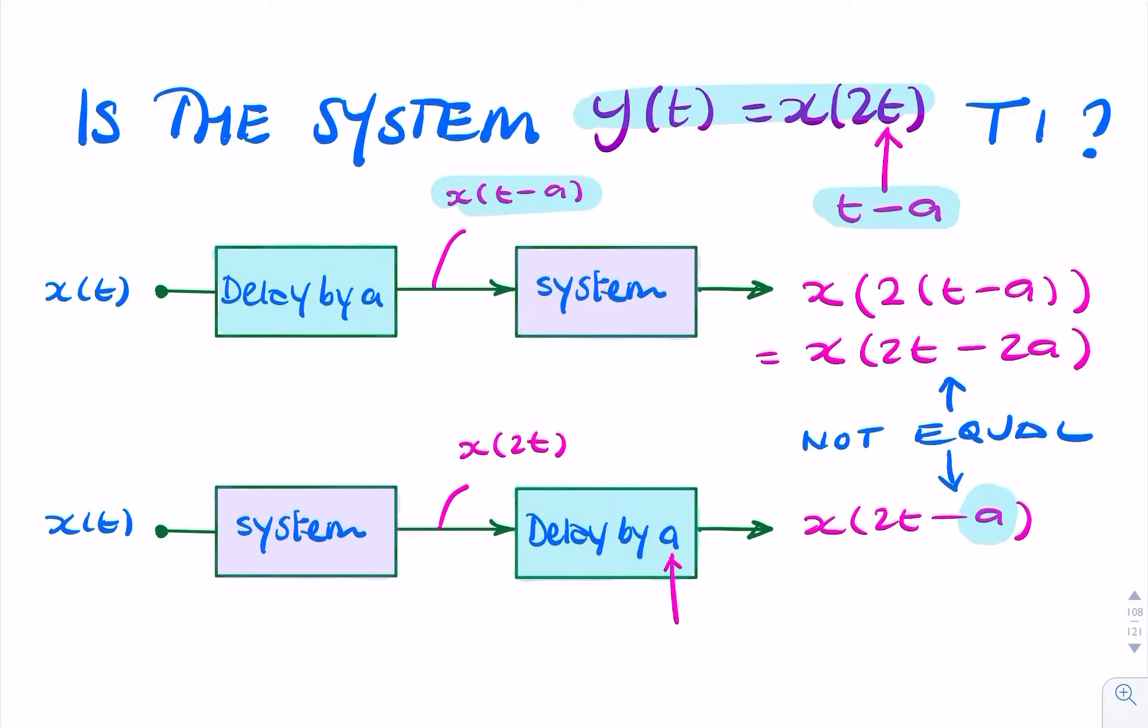And because they're not, we can say that the system isn't time invariant. That is, delaying the input by a seconds has had a different effect from delaying the output of the system by a seconds. So we call such a system a non-time invariant or a time-varying system.